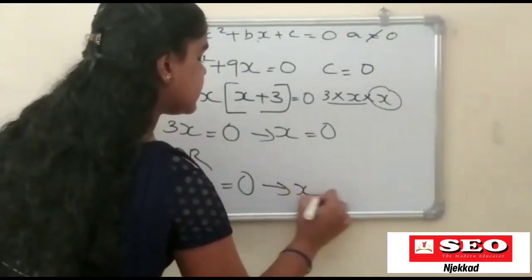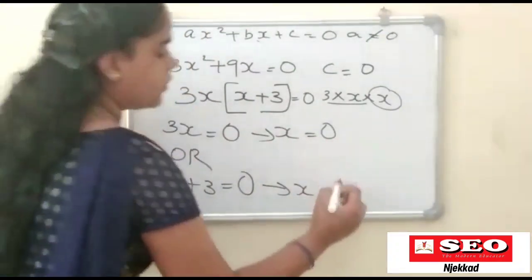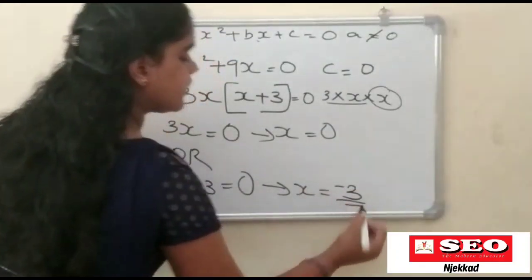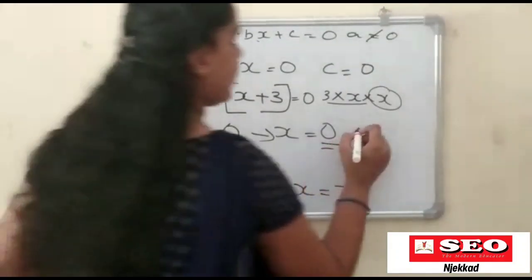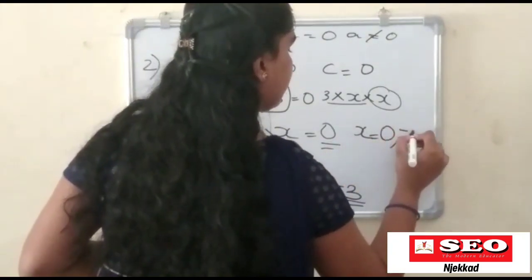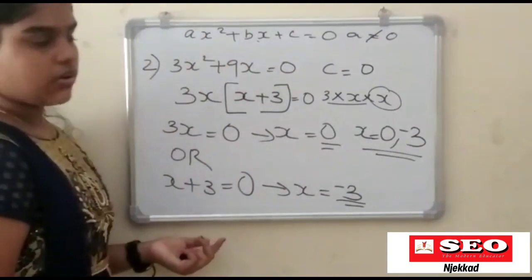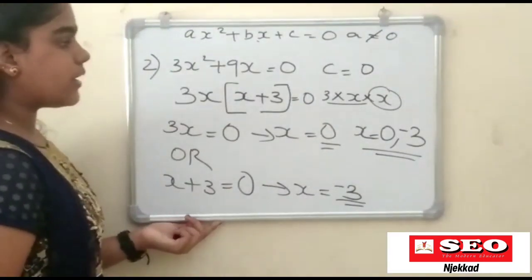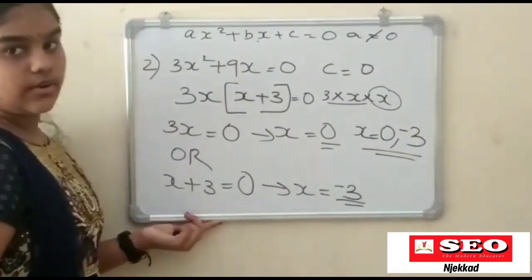Therefore xp is equal to plus 3 or minus 3. So xp is equal to 0 and minus 3. So we have the question: 3x squared plus 9x is equal to zero.